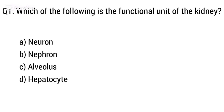Question 1. Which of the following is the functional unit of the kidney? Option A: Neuron, B: Nephron, C: Alveolus, D: Hepatocyte. The right answer is option B: Nephron.